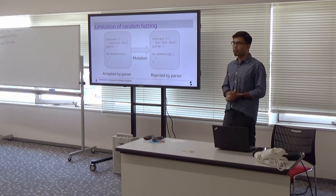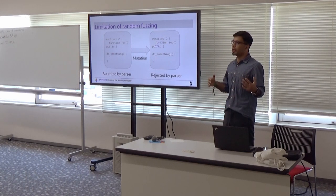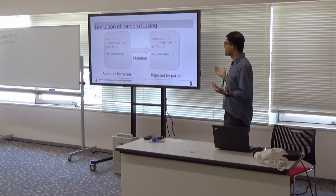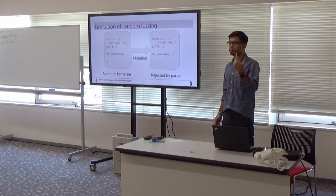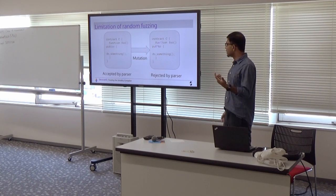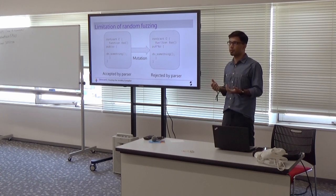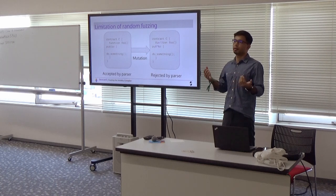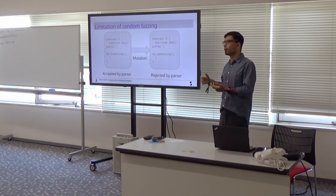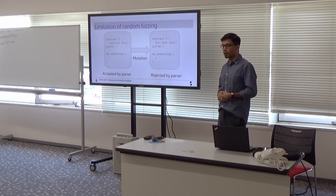Because it's totally random, you can imagine that with a very high likelihood, a random mutation at the input level is going to be simply rejected by the parser, and we don't want that because we want the program to be parsed and then optimized and then test the optimizer.